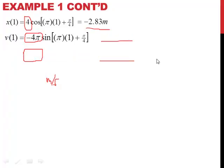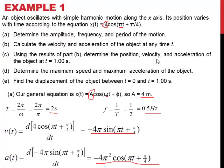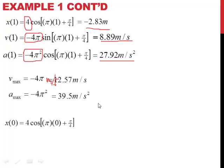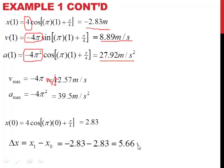For part e, we want to find the displacement of the object between 0 and 1 second. We already found the position at t equals 1 second is negative 2.83 meters. Plugging t equals 0 into our position function gives 2.83 meters. The displacement is the final position minus the initial position, so negative 2.83 minus 2.83 equals negative 5.66 meters.